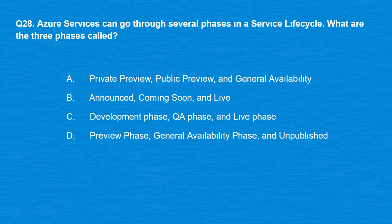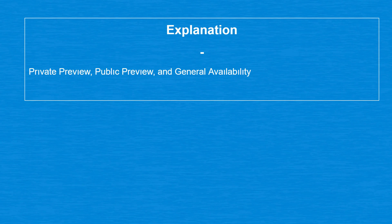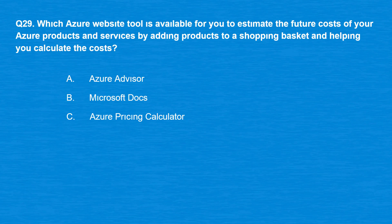Question 28: Azure services can go through several phases in a service lifecycle. What are the three phases called? Option A: Private preview, public preview, and general availability. Option B: Announced, coming soon, and live. Option C: Development phase, QA phase, and live phase. Option D: Preview phase, general availability phase, and unpublished. The correct answer is Option A: private preview, public preview, and general availability.